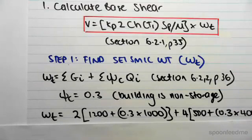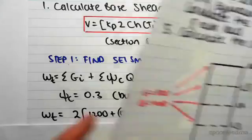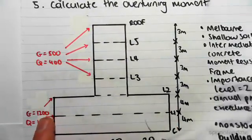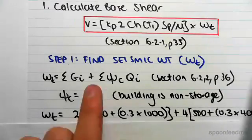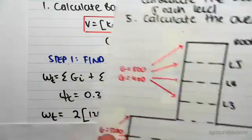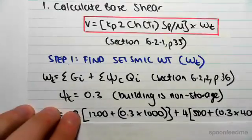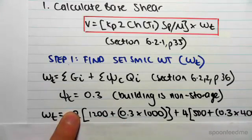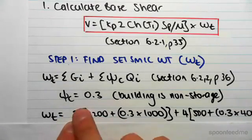We look at these two floors here, level 1 and level 2. The dead load is 1200 plus ψc, which is 0.3, of Q, which is 1000. For each floor it's 1200 plus 0.3 times 1000. There's two of those floors, so we put a 2 out the front.